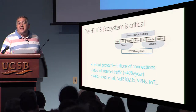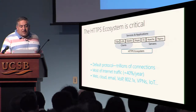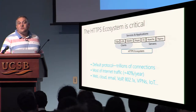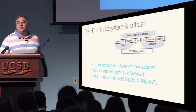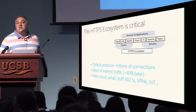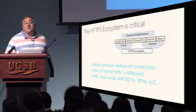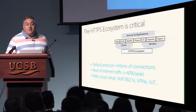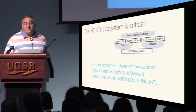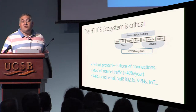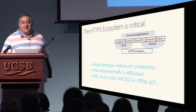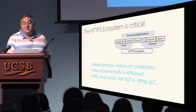HTTPS and TLS are critical. More and more people are consolidating around fewer protocols — doing your own protocol is considered a bad idea. Everyone ends up using standardized protocols. TLS, being the easiest to use, is running something like trillions of connections every few days. Most internet traffic is now encrypted using TLS, and it will become mandatory with HTTP/2. There are also VPNs, voice, and emails protected by TLS.